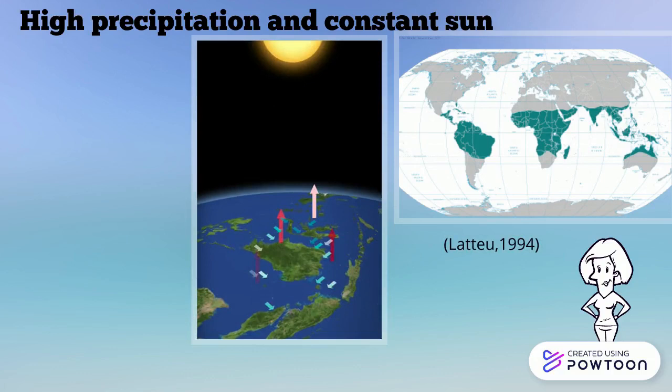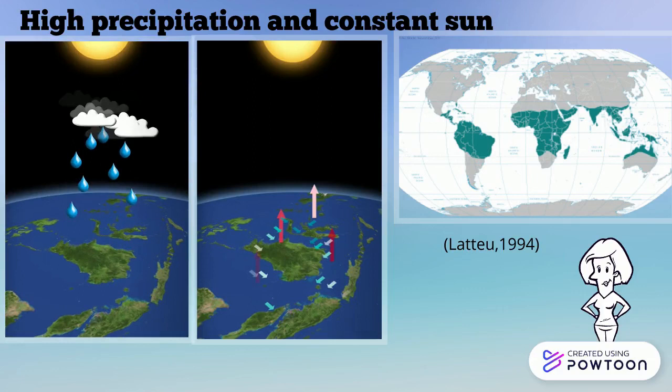This constant heat around the equator also affects air currents around the globe. It causes hot air to rise up, pulling moisture from the surrounding seas, as you can see in the blue arrows. This humid air that rises, once it cools down, comes back down as water — so it precipitates. This causes a high amount of precipitation around the year.